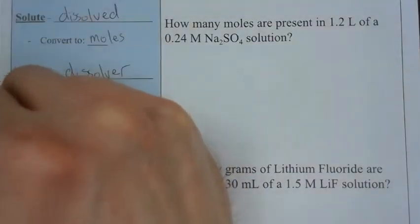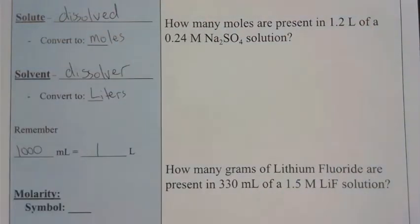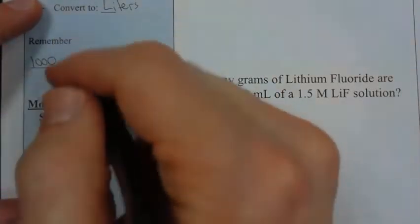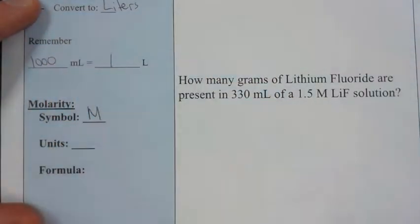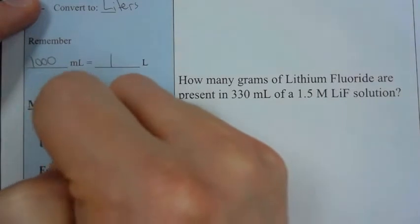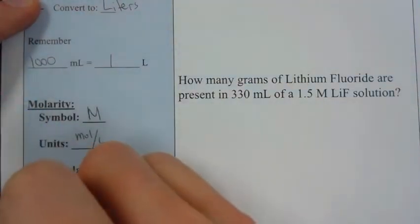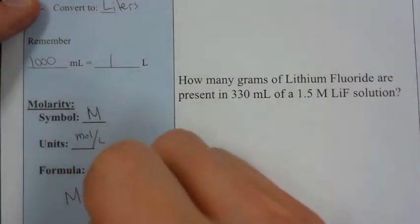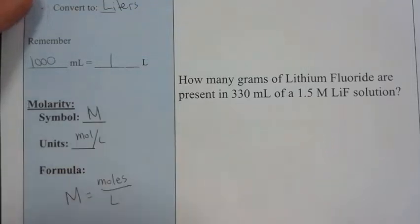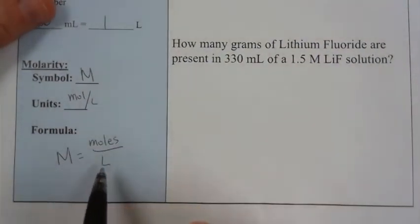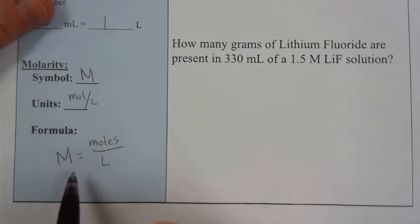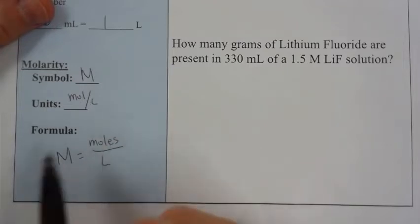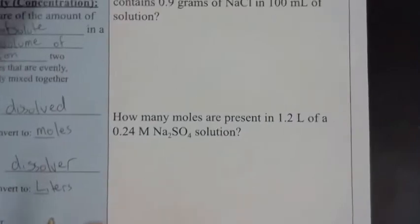The solvent we always want to convert into liters. Our reference point is always moles per liter. It's important to remember that 1,000 milliliters equals one liter because we'll be using that conversion quite a bit. The symbol for molarity is a capital M and the units stand for moles per liter. The equation is pretty straightforward. The molarity of a solution equals moles divided by liters.